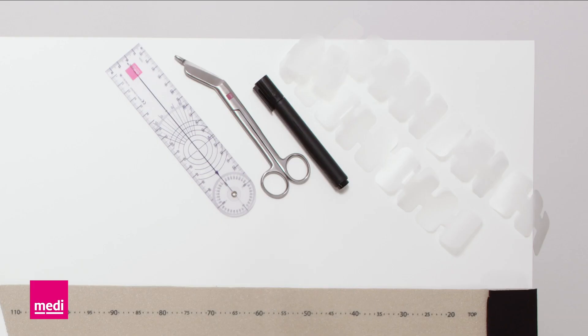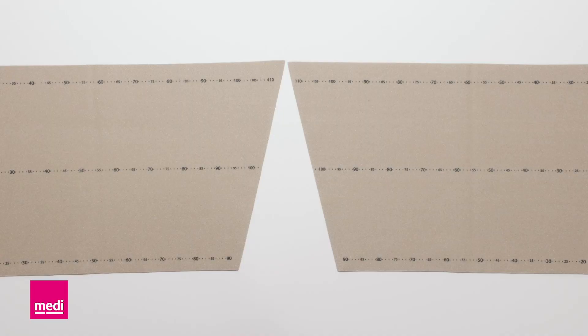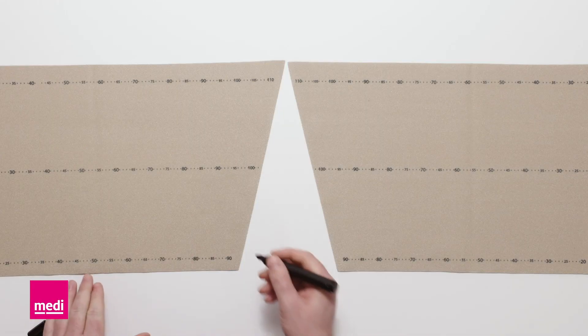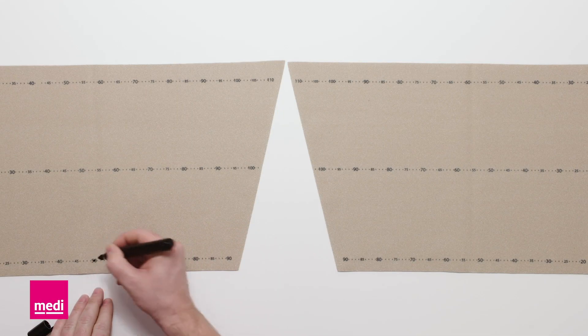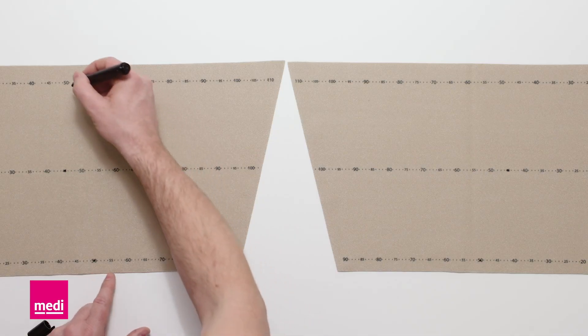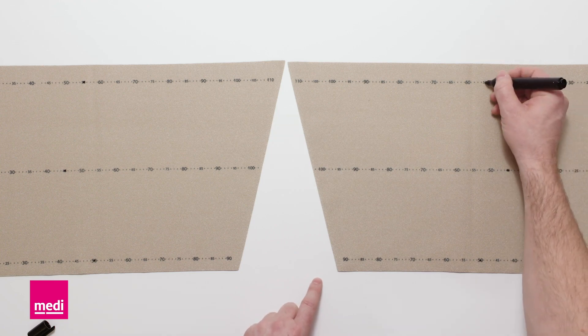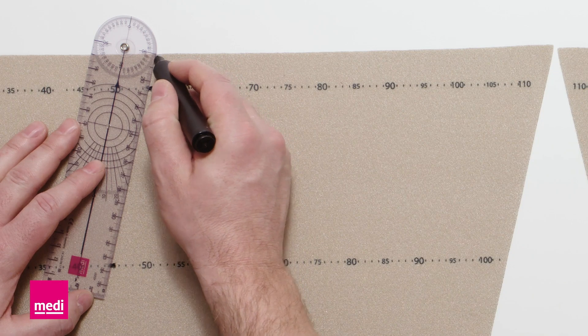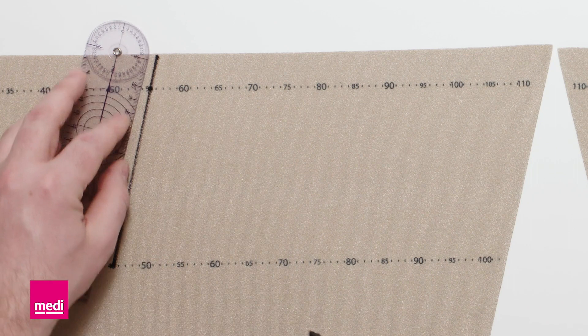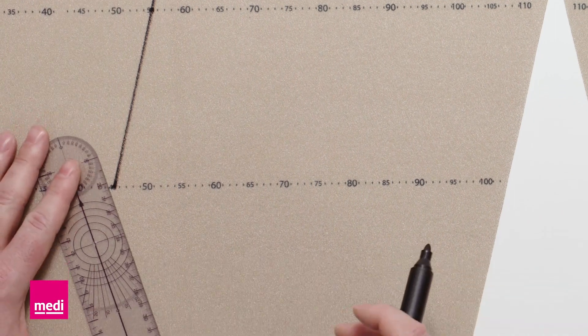The two components are connected with the spine. First, mark the calf circumference C at the bottom, the knee circumference E in the middle, and the thigh circumference E2 at the top. Connect the points and cut both components along the plotted line.